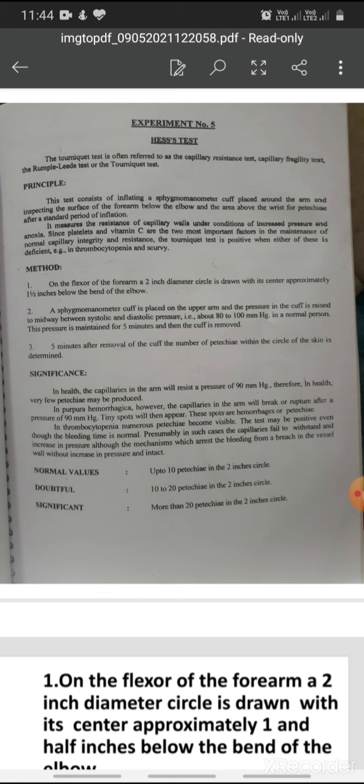It measures the resistance of capillary walls under conditions of increased pressure and anoxia. This checks capillary resistance when we increase pressure. Since platelets and vitamin C are the two most important factors in the maintenance of normal capillary integrity and resistance, vitamin C and platelets are the important factors to maintain capillary resistance.